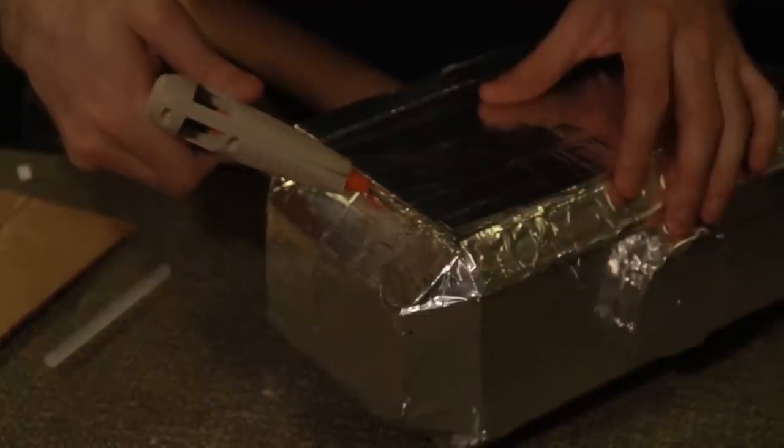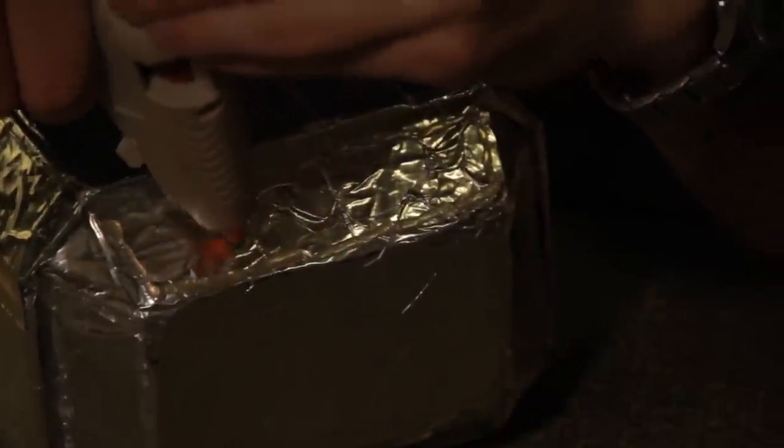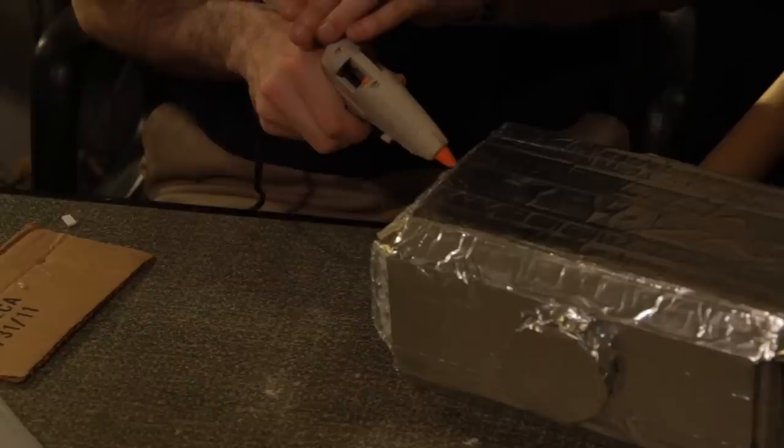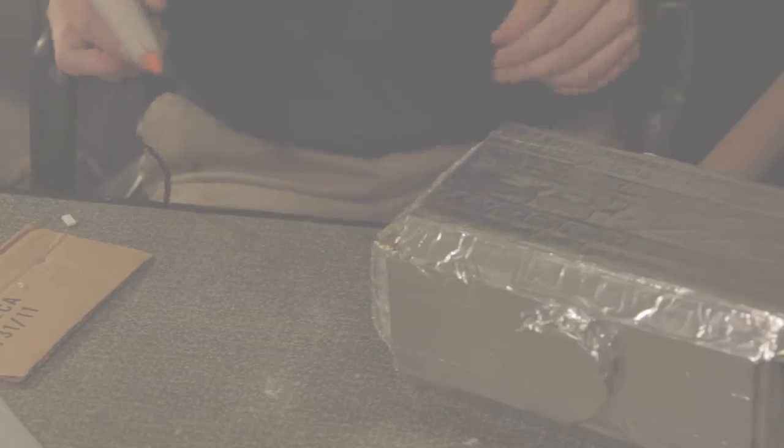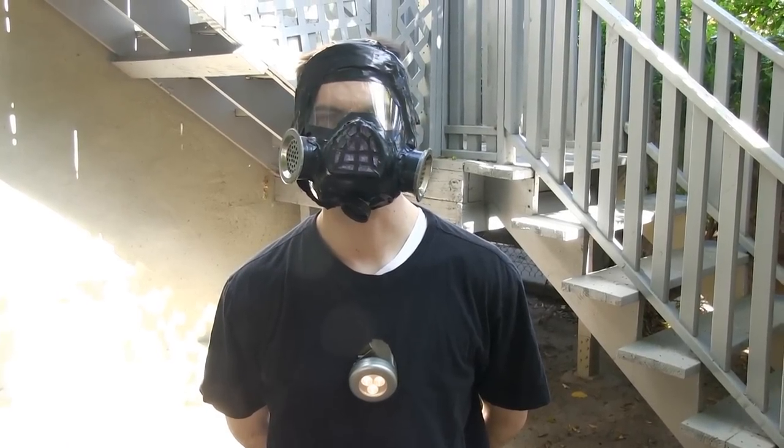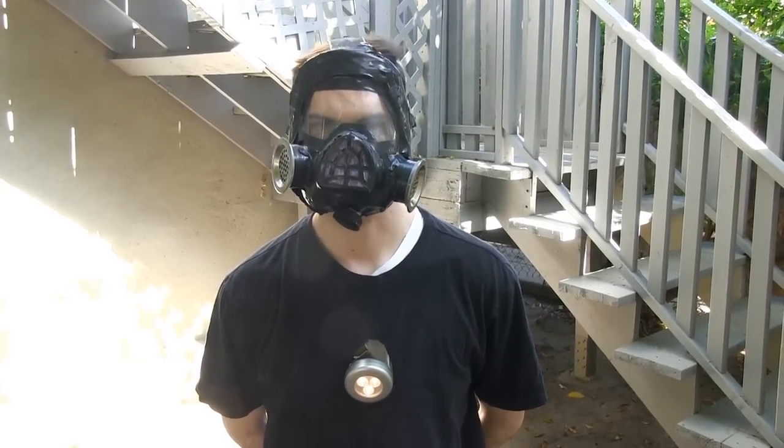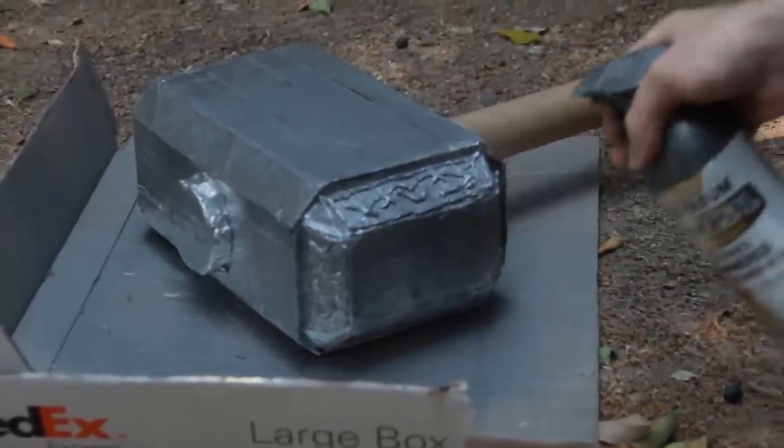Use a hot glue gun to create outlines and Norse designs on the side flaps of the hammer. And now it's time to move outside. Always be safe when handling spray paint. Use goggles and masks at all times. Paint the entire hammer with the pewter textured paint.